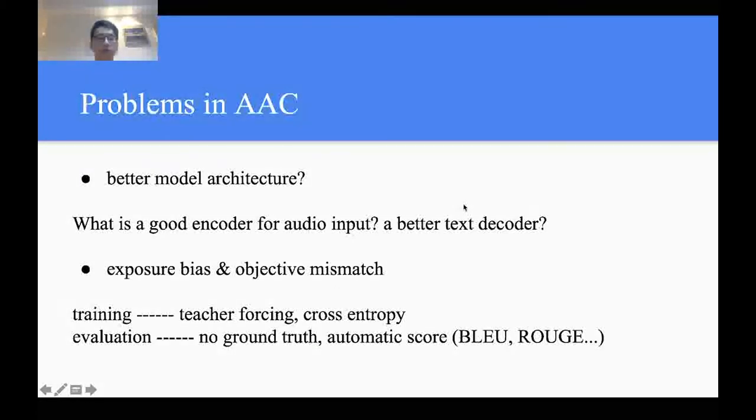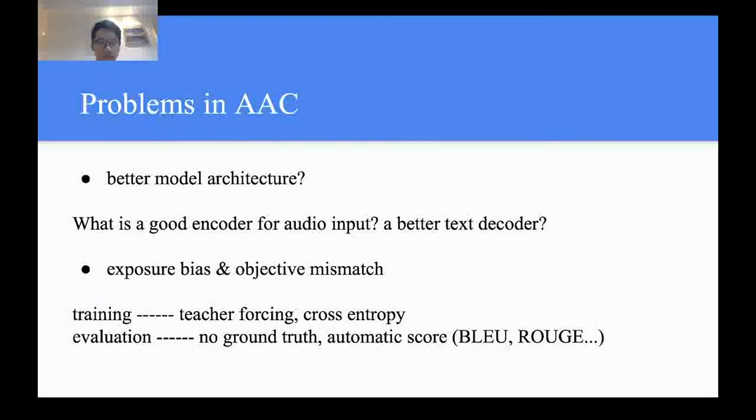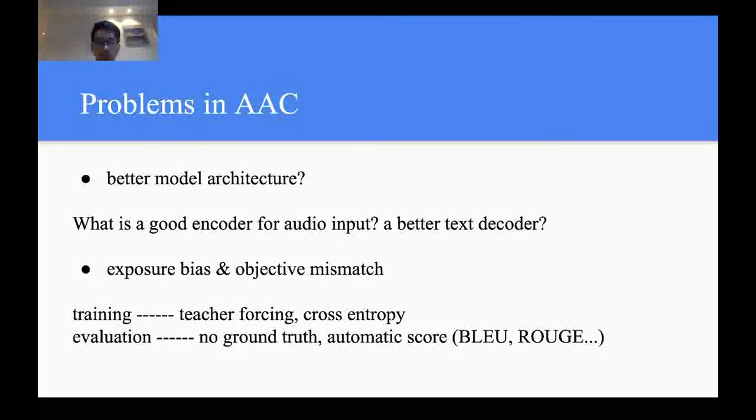From our point of view, problems in audio captioning lie in two aspects. First, we are exploring for better model architectures. Popular audio captioning methods based on neural networks is the encoder-decoder approach. This requires both an effective audio encoder and an effective text decoder. Therefore, searching for an appropriate architecture is an important problem.